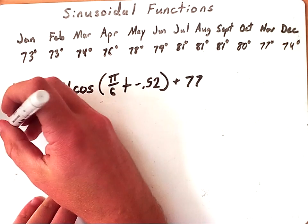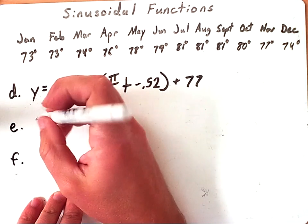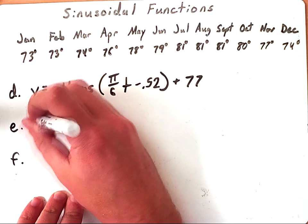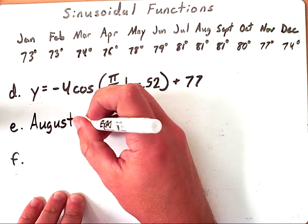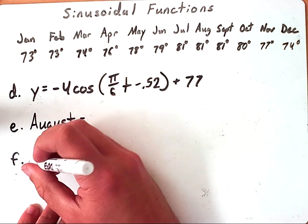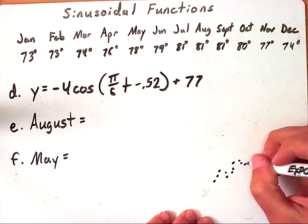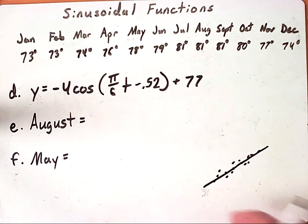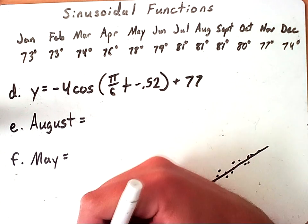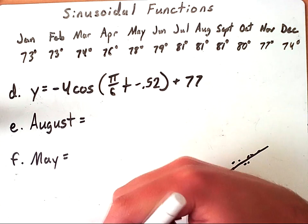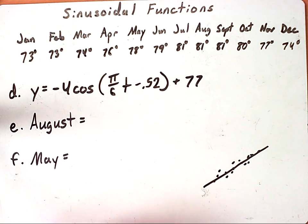From here we could use this equation to solve for any month we wanted to. We could look and say what's this going to tell us that the temperature in August is in Honolulu, or what's the temperature in May. Now it's important to point out that what we've written here is just a model. This isn't going to be exact, it's going to predict. It's kind of like if you had a scatter plot of data that was following a trend and we drew a line through that data - we're not going to hit every single point however we're going to be around that.